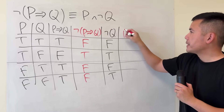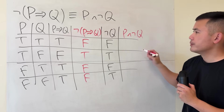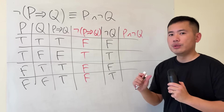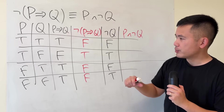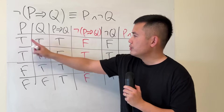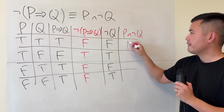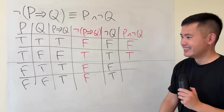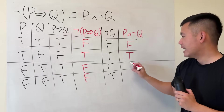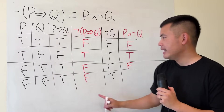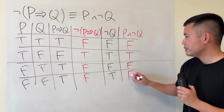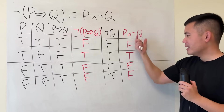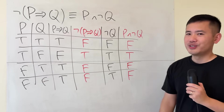Finally, P and not Q: this is an AND statement, so both must be true. True and false is false; true and true is true; false and false is false; false and true is false. So the result is false, true, false, false. This is the same as the negation of P implying Q, so they are logically equivalent.